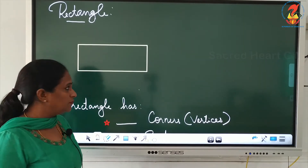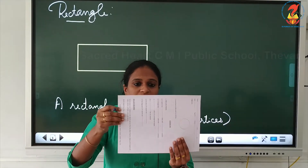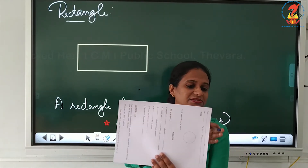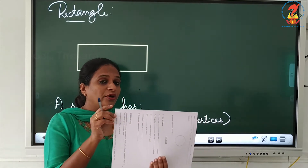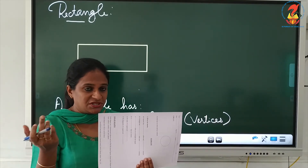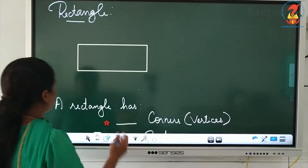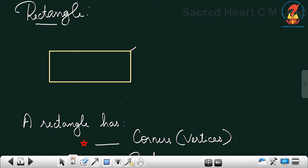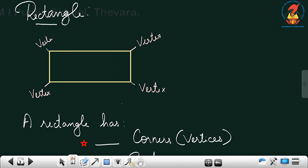Now let's move on to the shape rectangle. I have drawn a rectangle. See how many sides we have — if I take a paper, this is one side, this is another side, this is another side, and we have four sides: one, two, three, four. We have four sides and we have four corners, also called vertices.